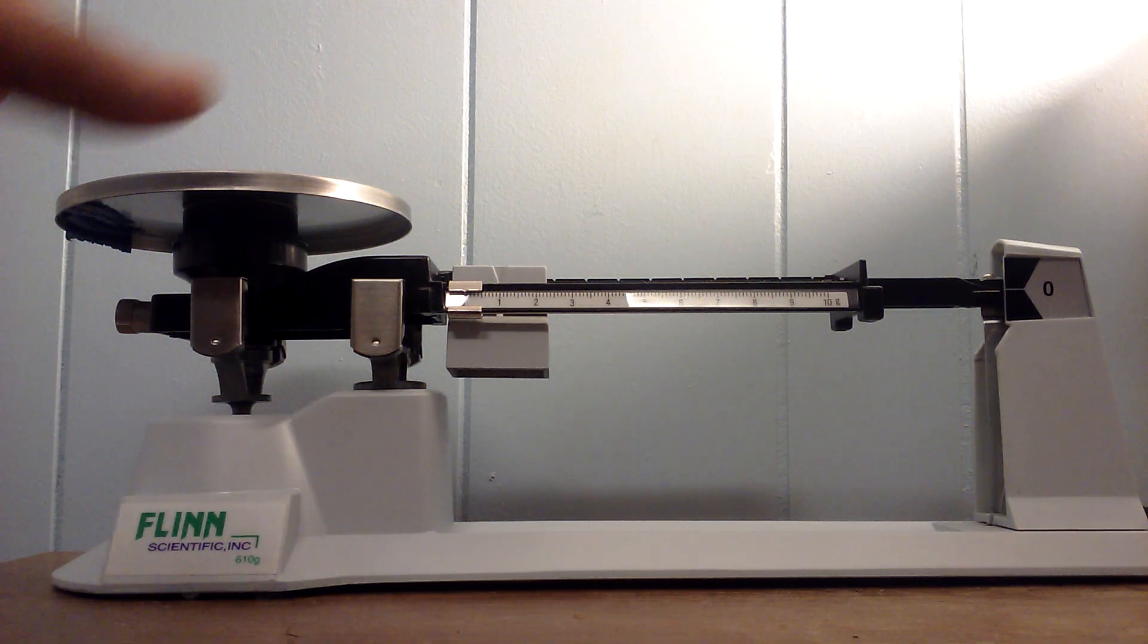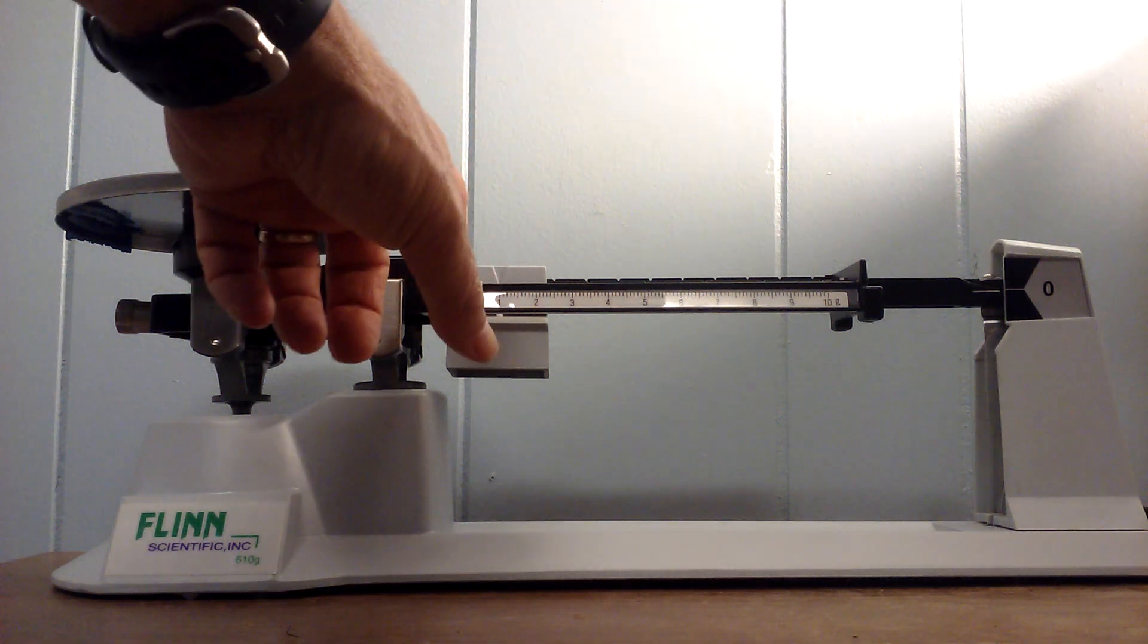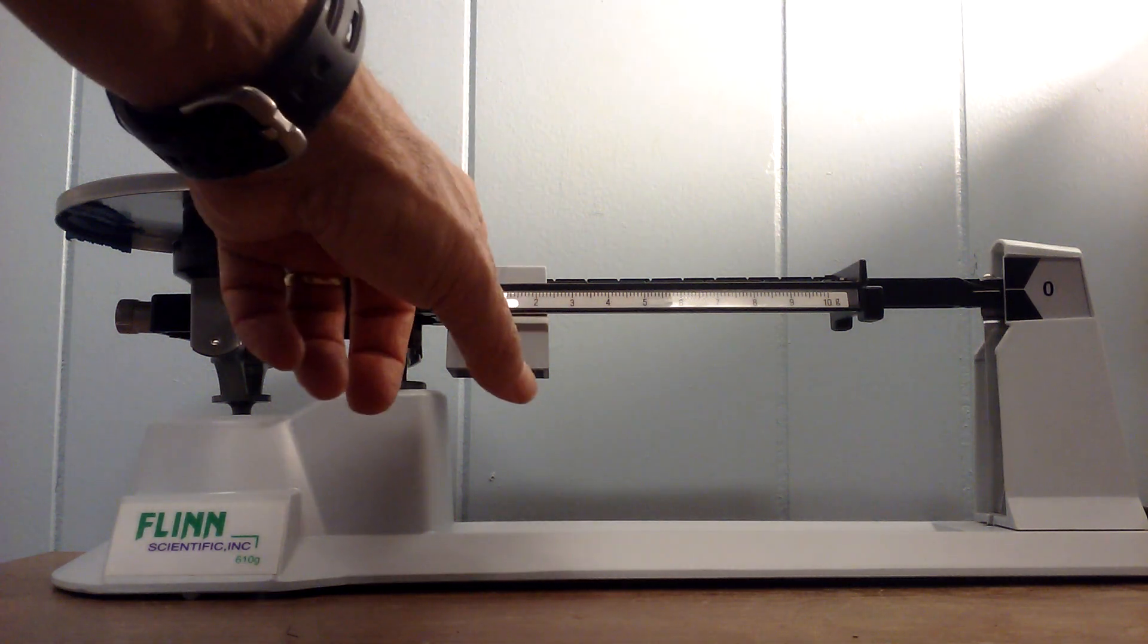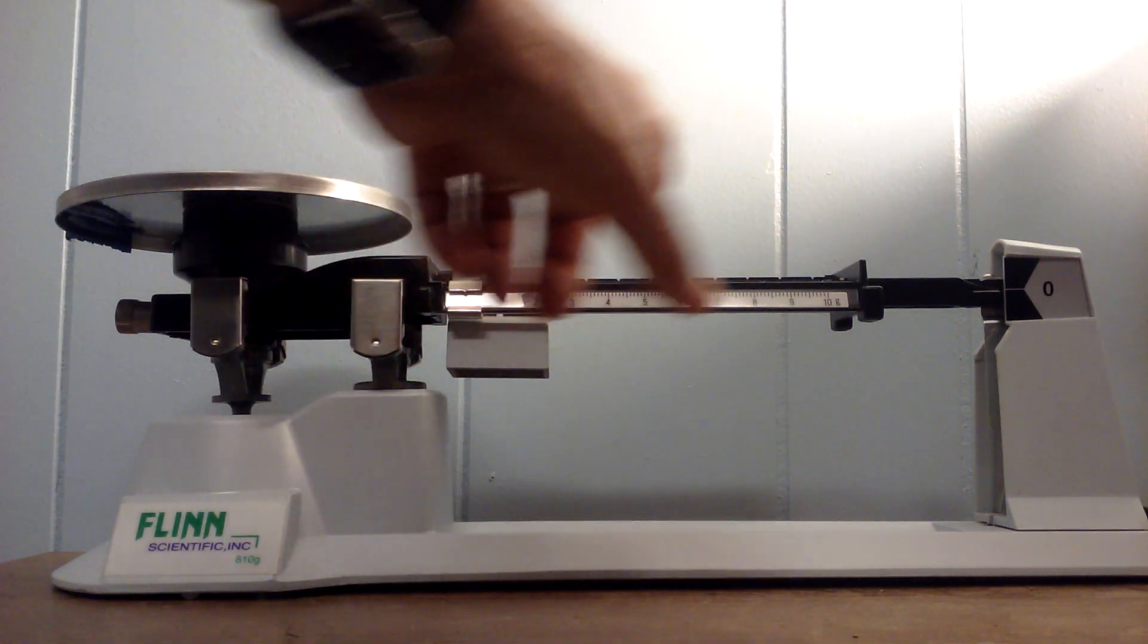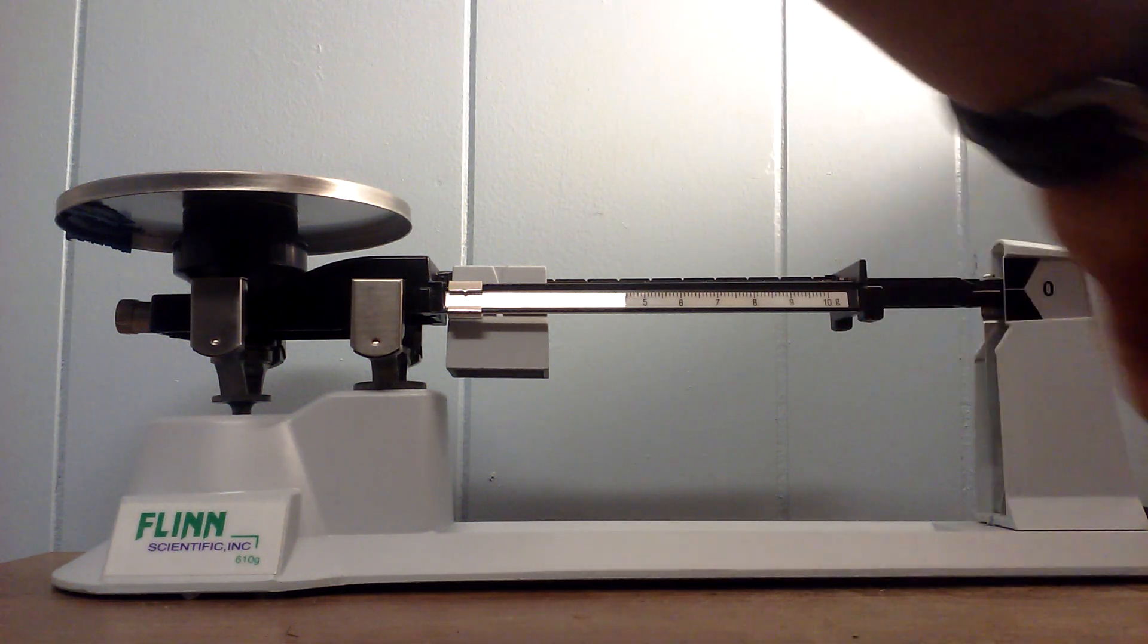The first thing you need to do is make sure the mass is zeroed and it is zeroed when each of the weights are exactly on zero and these two lines, the two white lines, are lined up exactly.